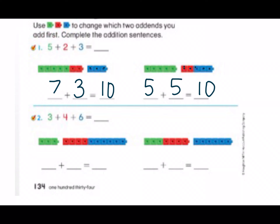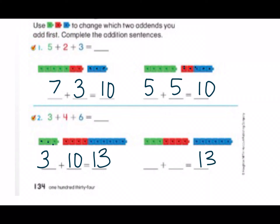Number two: three plus four plus six equals what? Looking at the bottom I see they left the three green cubes by themselves. They added together four and six, which gives us ten. So three plus ten equals what? If we don't know off the top of our head we can count on with our bigger number. So we would have ten in our head: ten, eleven, twelve, thirteen. So our sum over here should also be thirteen.